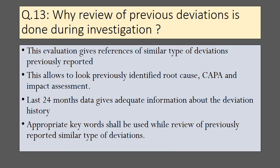Why is the review of previous deviations done during deviation investigation? This evaluation gives references of similar types of deviations that have been reported previously. It allows review of previously identified root causes and impact assessments. Last 24 months of data provides adequate information about deviation history. Appropriate keywords shall be used while reviewing previously reported similar deviations.